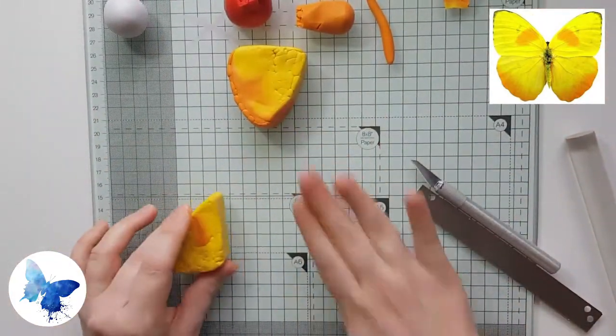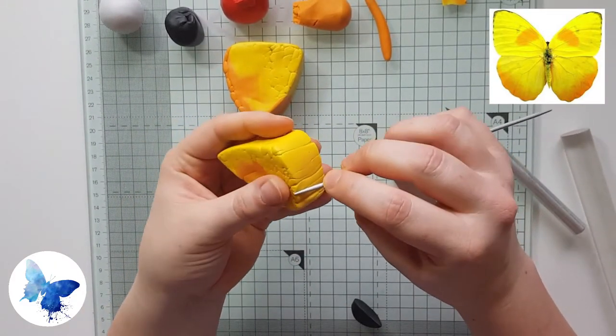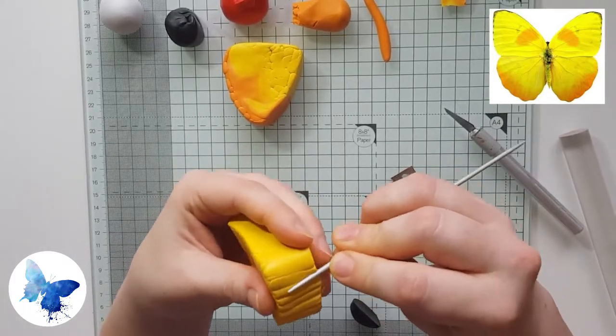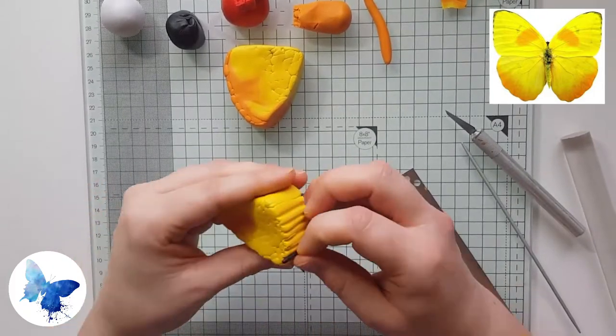Once you're happy with both the wings you want to just add the black detail on the top wing so I'm making little indents on the outer wing using my needle tool then I'm going to roll out some thin snakes of black clay and just add those onto the outer wing.